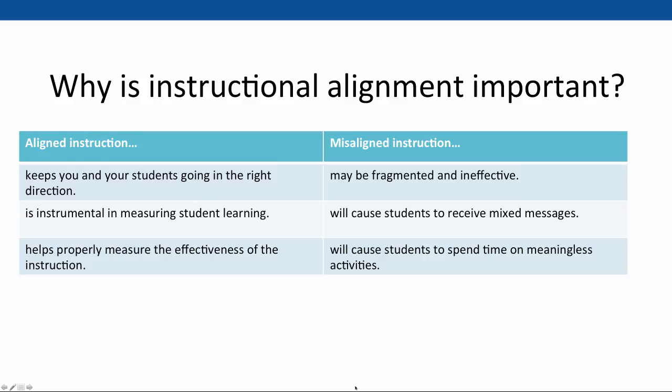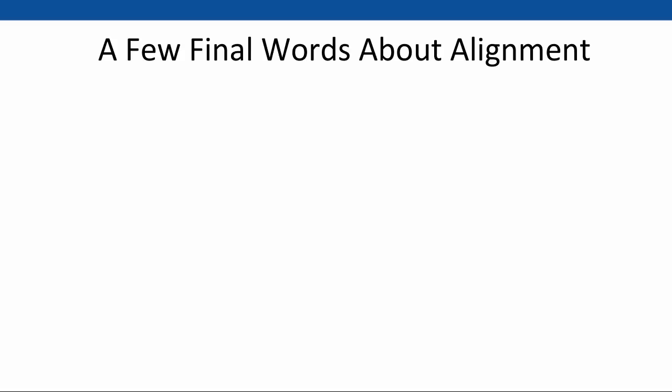Misalignment may also cause you to over- or underestimate the effectiveness of your instruction. For example, if students do poorly on an assessment, you may think your instruction is poor, when actually your instruction is outstanding but doesn't relate to the assessment or learning objectives.